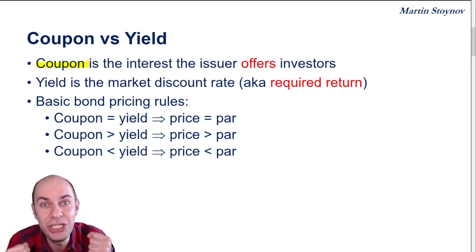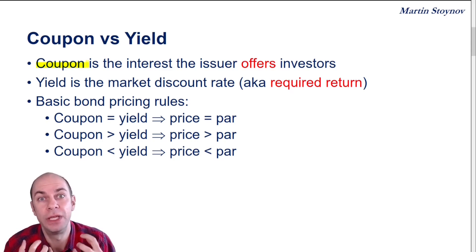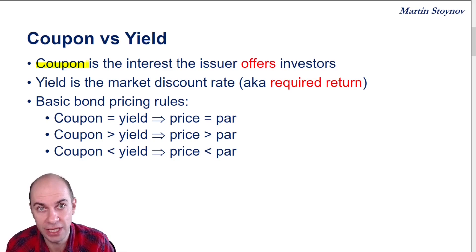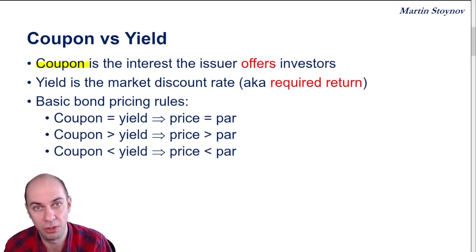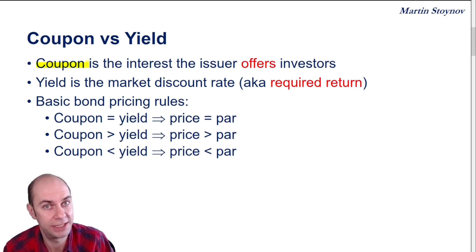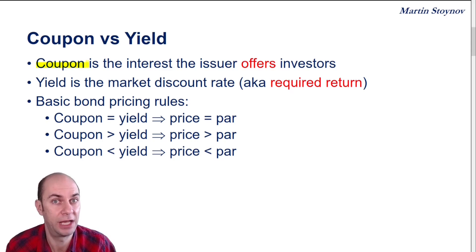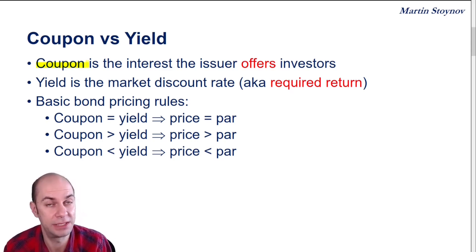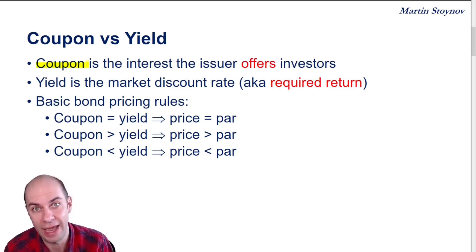The coupon is the interest that our issuer or our borrower is willing to give us. This is what they are offering us — here's the legal contract between the lender and the borrower. I am willing to pay you this amount of interest. Let's say 5% of the face value. The face value is $1,000, which means I'm willing to pay you $50 of interest every year.